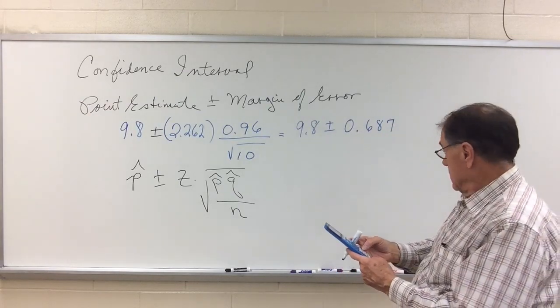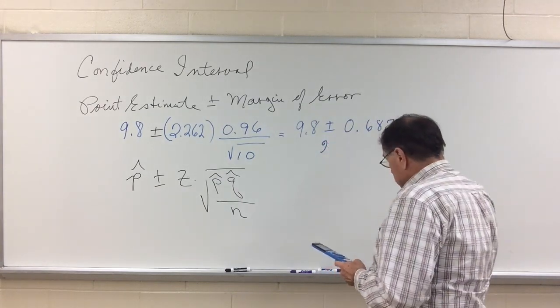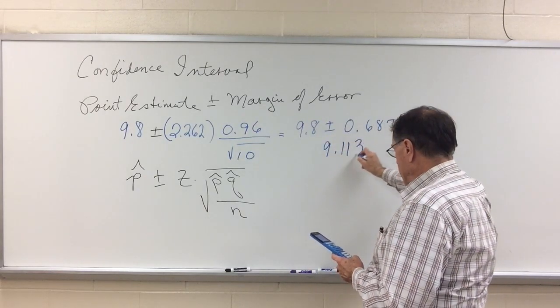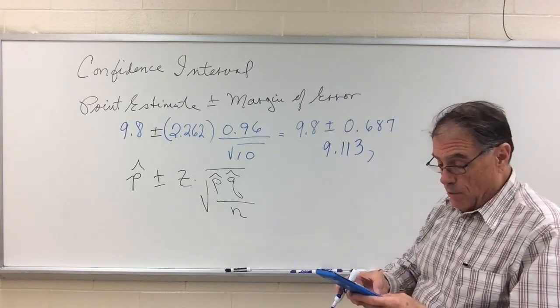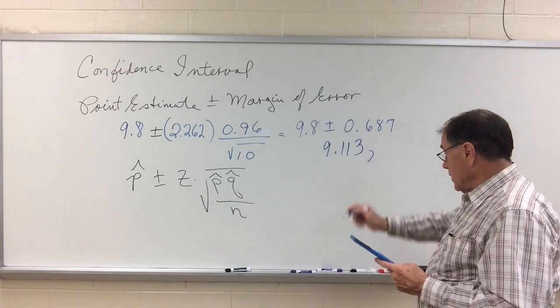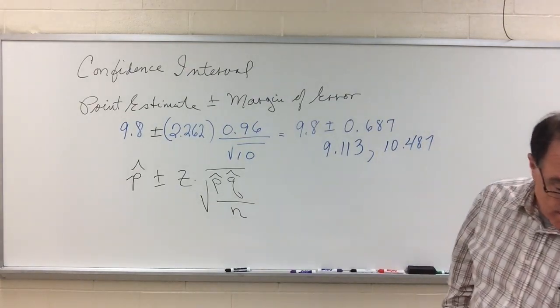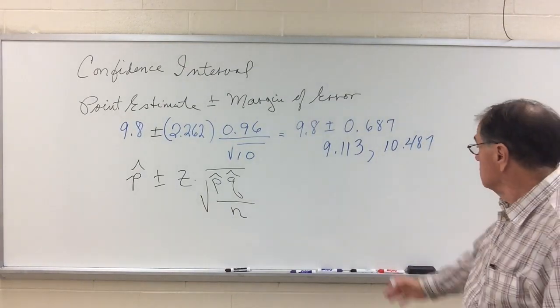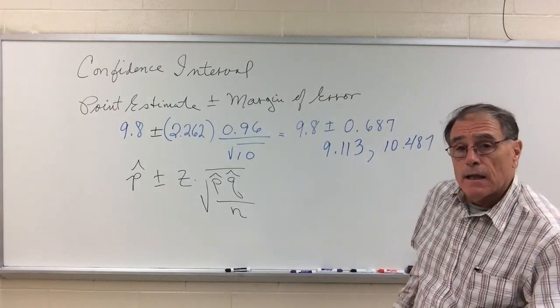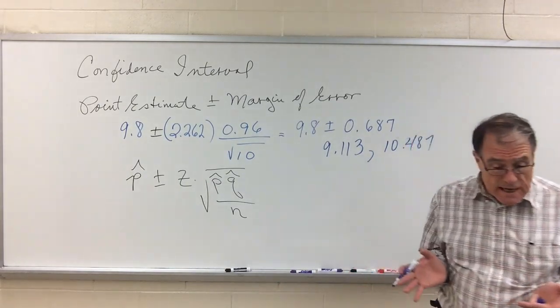So then for my confidence interval, 9.8 minus 0.687 would give me a low end of 9.116. And then taking 9.8 and adding 0.687 would give me a high value of 10.487. And this would be my confidence interval for the average growth in the first year. Let's remember what a confidence interval means. This is a 95% confidence interval.